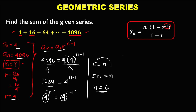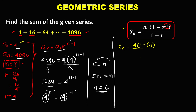Since we have now the number of terms, we can solve the sum of this geometric series. From this formula, the sum equals a sub 1 — and a sub 1 is 4 — times 1 minus r, where r is 4, to the power n, where n equals 6, then over 1 minus r, and r is 4.